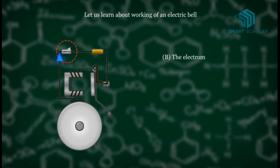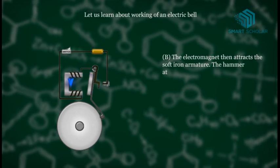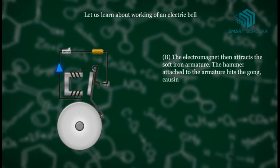B. The electromagnet then attracts the soft iron armature. The hammer attached to the armature hits the gong causing a ring.